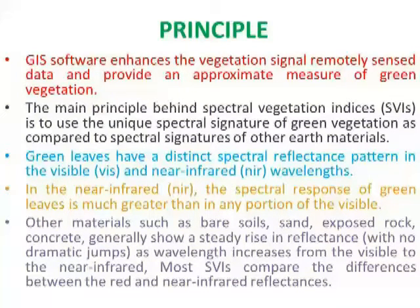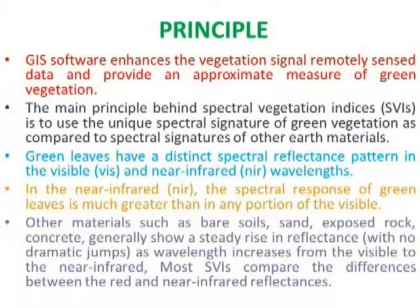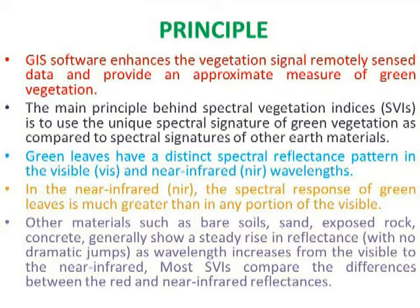GIS software enhances the vegetation signal in remotely sensed data and provides an approximate measure of green vegetation. The main principle behind spectral vegetation indices is to use the unique spectral signature of green vegetation as compared to spectral signatures of other earth materials. Green leaves have a distinct spectral reflectance pattern in the visible and near-infrared wavelengths. In the near-infrared, the spectral response of green leaves is much greater than in any portion of the visible.